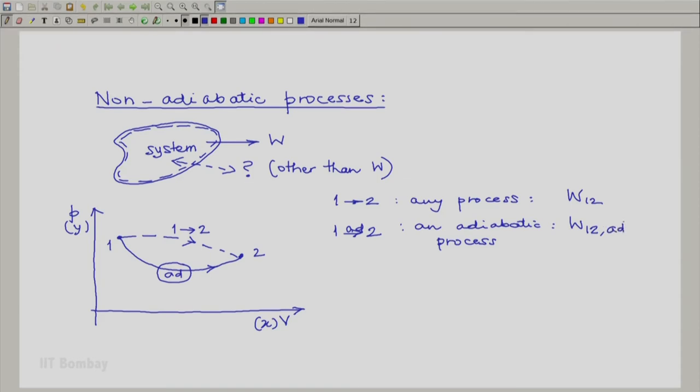w12 adiabatic, because one is an adiabatic process and another is a non-adiabatic process, we can say that in general the two work interactions will not be equal.